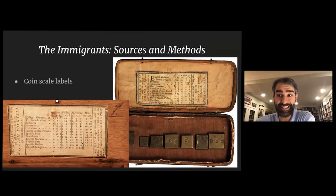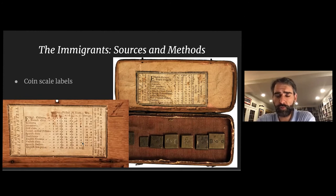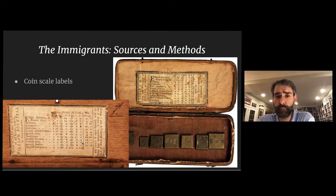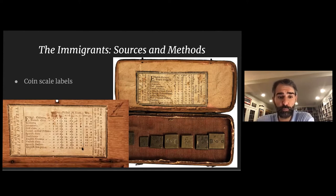Coin charts also appear set into labels of coin scales from this era. One printed on a scale sold by Joseph Richardson — an assayer and goldsmith in Philadelphia, later a regulator whose son became an assayer at the first U.S. Mint — is a prime example. Another box was made for Philadelphia merchant William Pointel. American coin scale labels are particularly special and important for our purposes, more so than English, French, or German ones.